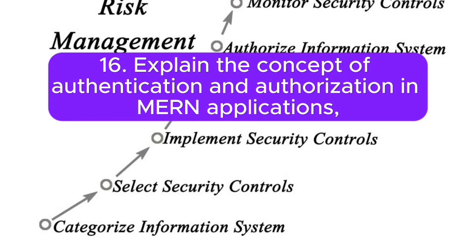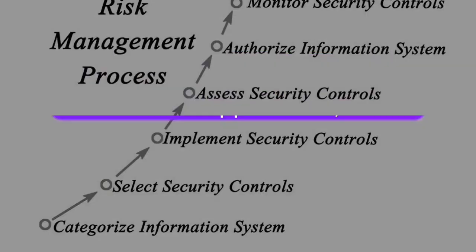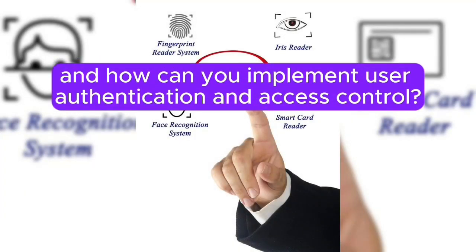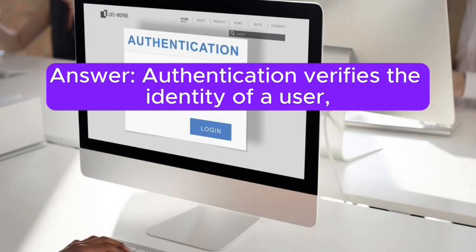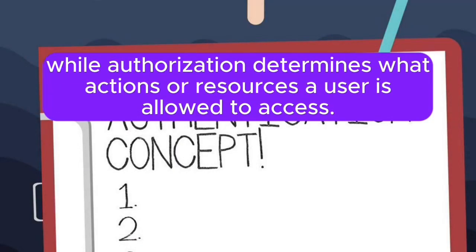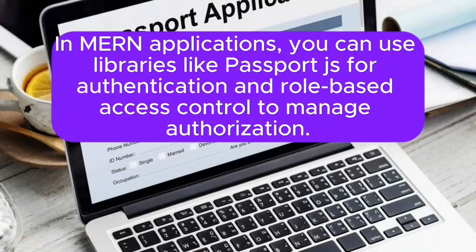16. Explain the concept of authentication and authorization in MERN applications, and how can you implement user authentication and access control? Answer: Authentication verifies the identity of a user, while authorization determines what actions or resources a user is allowed to access. In MERN applications, you can use libraries like Passport.js for authentication and role-based access control to manage authorization.